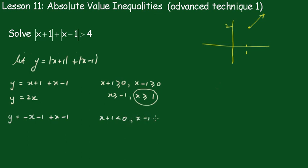And the second bit here is x minus 1 is going to be greater than or equal to 0, if x is less than negative 1 and x is greater than 1. But they can't both happen, can it? We can't have it being less than minus 1 and greater than 1, so this condition is out, we can't use that.